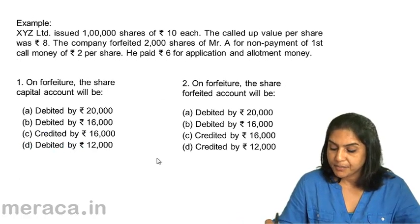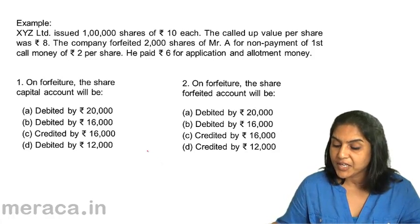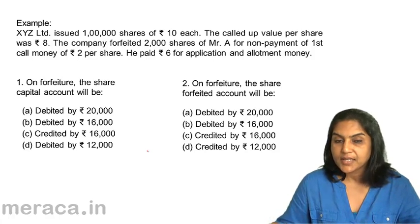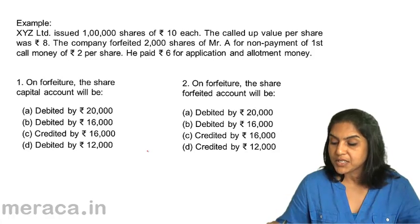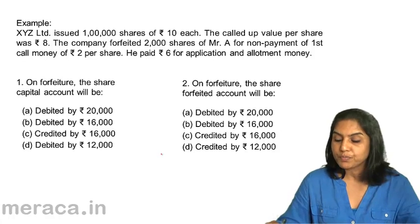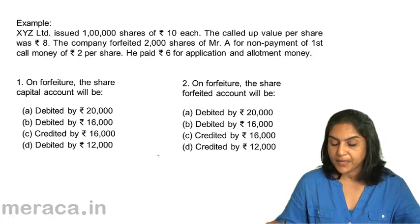Another example. XYZ Ltd issued 1 lakh shares of Rs 10 each. The called-up value per share was Rs 8. The company forfeited 2,000 shares of Mr. A for non-payment of first call money of Rs 2 per share. He paid Rs 6 for application and allotment money.